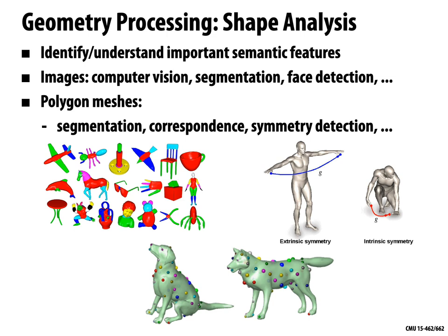There are also questions about the relationship between two different geometric models. If I have two different scans of the body and want to find a corresponding fingertip on another model, the vertices aren't given in any particular order and the polygons might not even be consistent — different numbers of polygons triangulated in a different way. How would you match the nose to the nose? Lots of very interesting challenges in shape analysis.